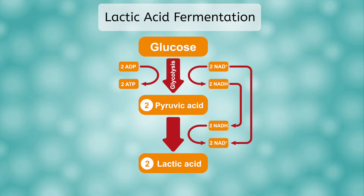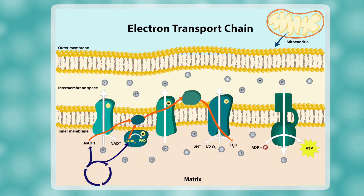Do you remember what NADH does? It carries electrons. During aerobic cellular respiration, NADH donates its electrons to the electron transport chain, turning back into NAD+ in the process. The NAD+ then returns to glycolysis to accept more electrons. It's sort of like a battery that gets recharged over and over again.